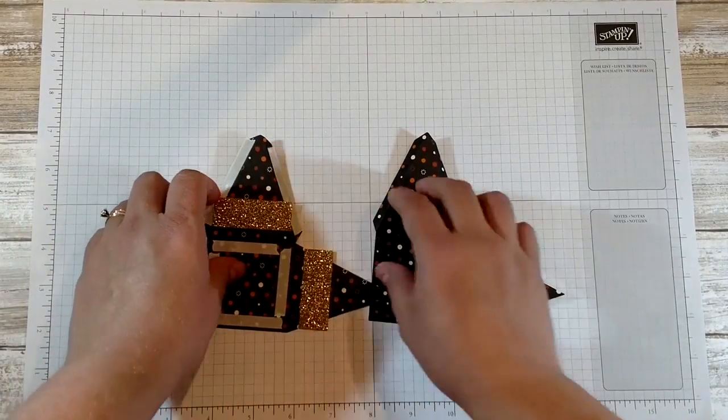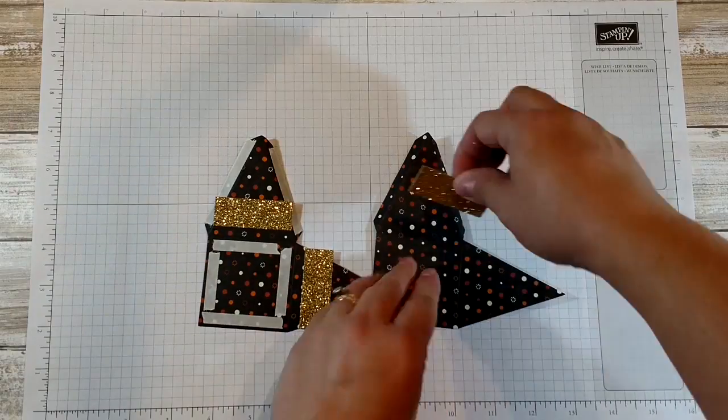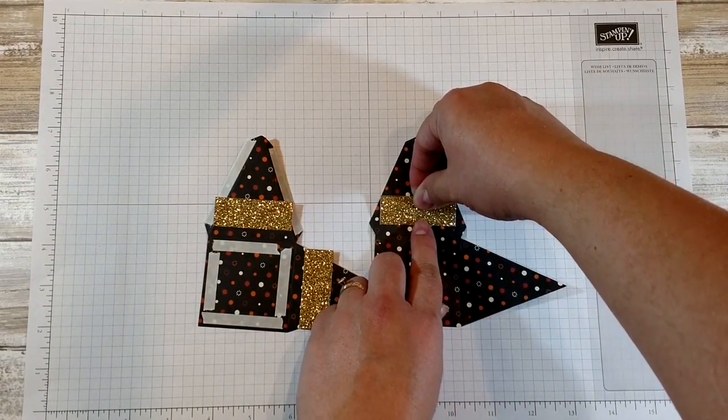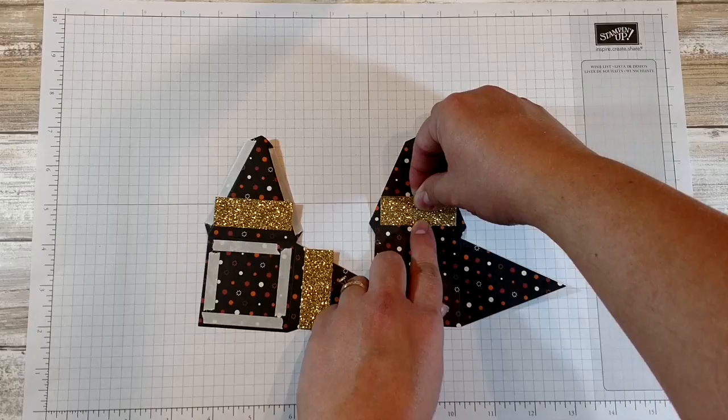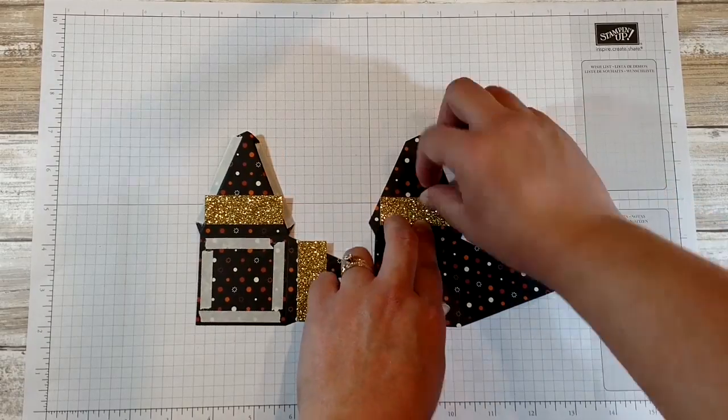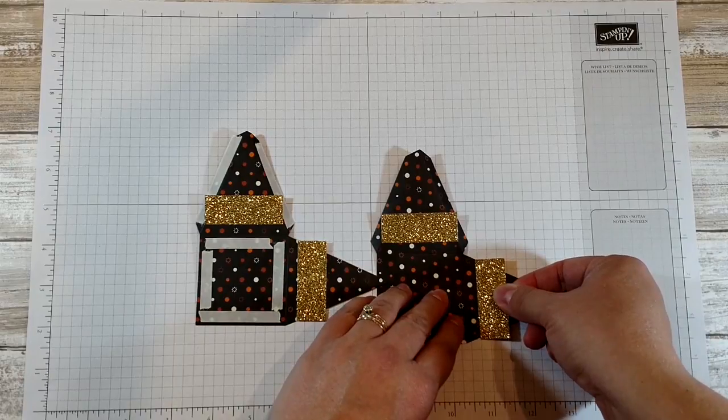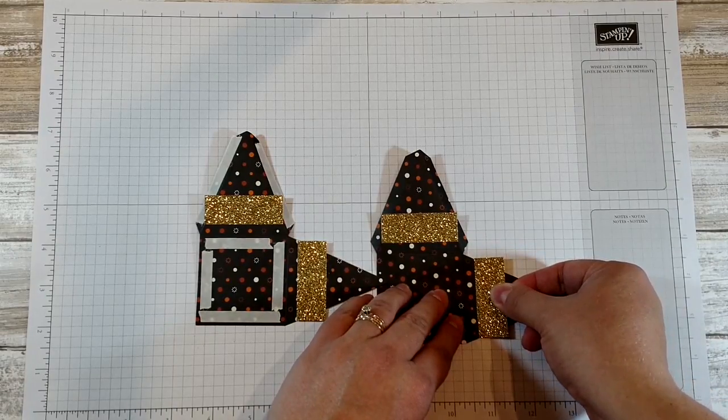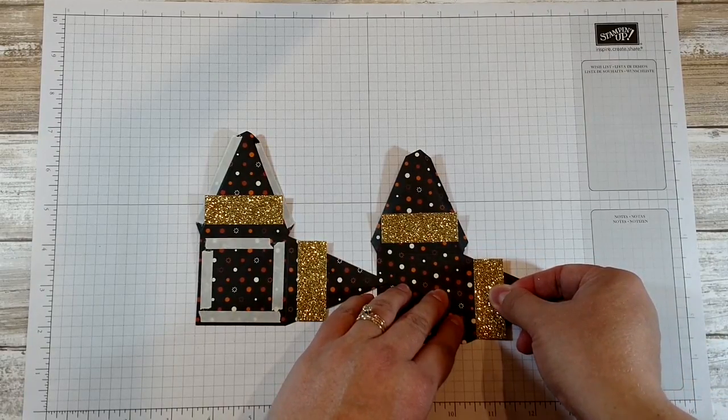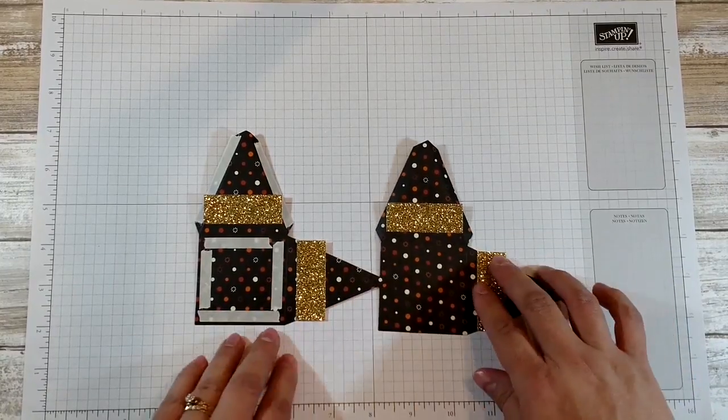Now I'm going to do it on this one the same way. Line up the bottom corners with the score lines on this one. And line the bottom corners with the sides of this triangle.